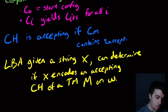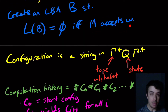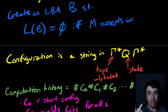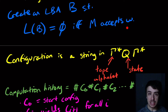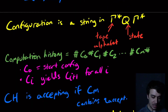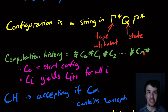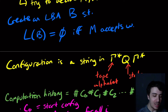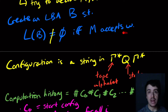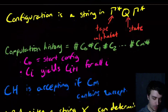So why does this matter? If M accepts W, then there is exactly one accepting computation history — one, because the Turing machine is deterministic. If M does not accept W, there can't possibly be an accepting computation history, because if there were, the last configuration would encode an accepting run of M on W, which is a contradiction. Therefore, the language of B is not empty if and only if M accepts W.